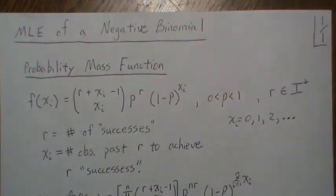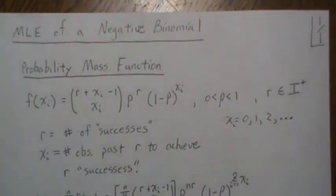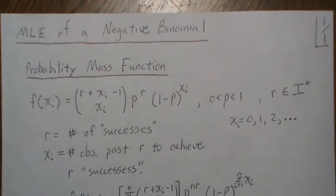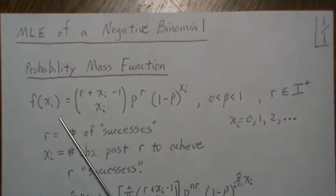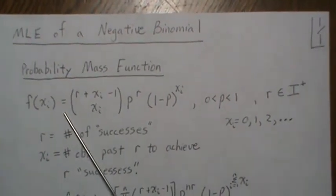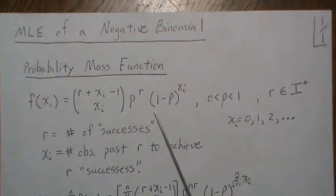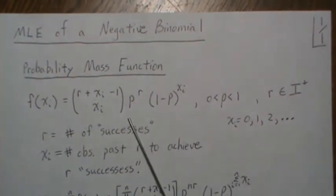Hello, in this video we derive the maximum likelihood estimator for a negative binomial. Here is the probability mass function that we're going to use, and there are several versions of this, but this is the one that we're going to use, represented in this form here.